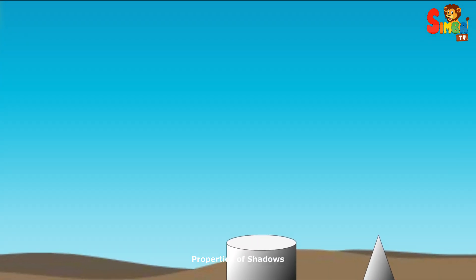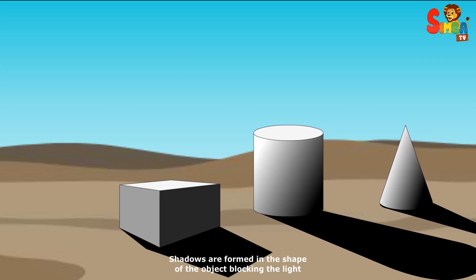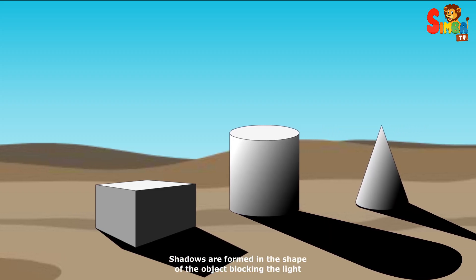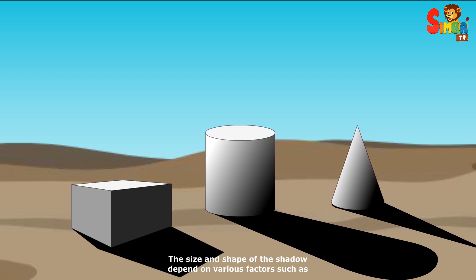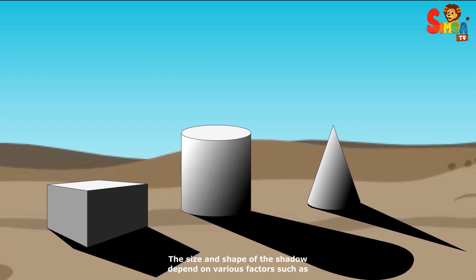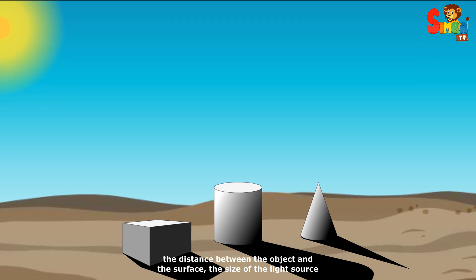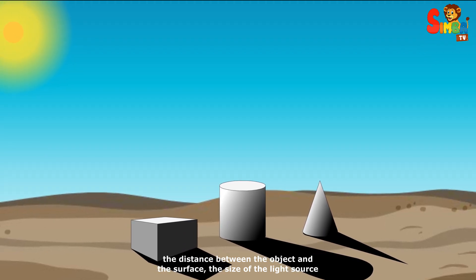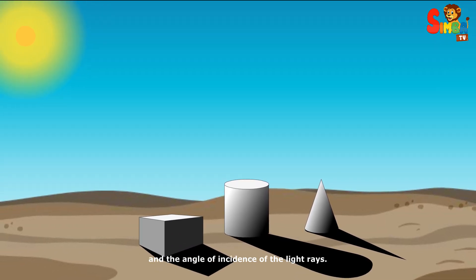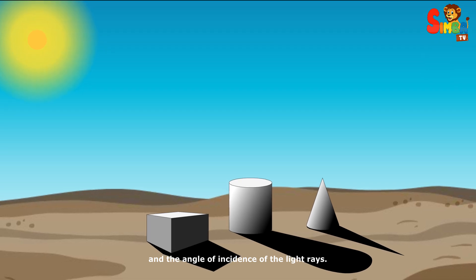Properties of shadows. Shadows are formed in the shape of the object blocking the light. The size and shape of the shadow depend on various factors, such as the distance between the object and the surface, the size of the light source, and the angle of incidence of the light rays.